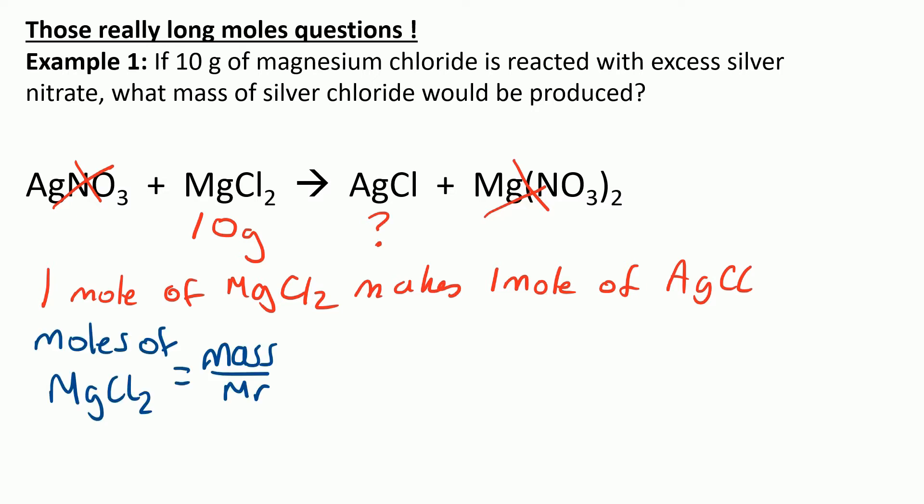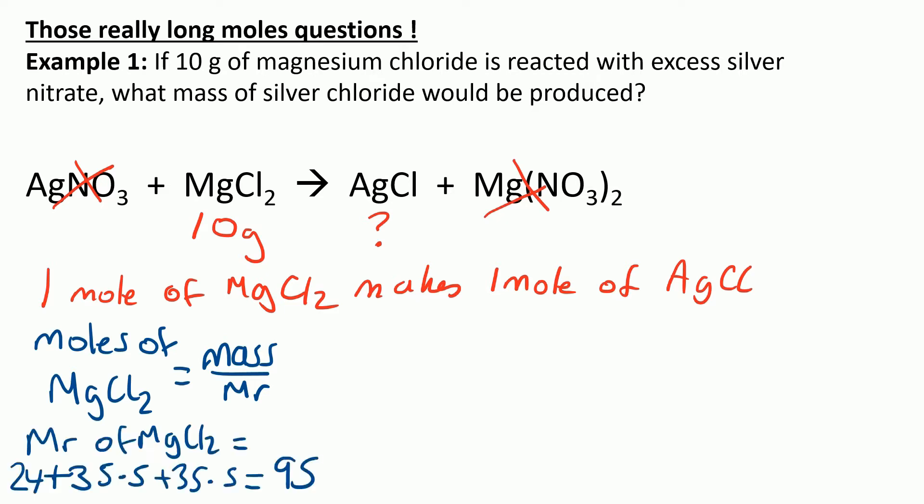So we work out the moles using mass over MR. It's a good idea to write next to it what you're working out the moles of — so moles of MgCl2 is mass over MR. The MR of MgCl2 is the mass numbers of magnesium, 24, plus 35.5, plus 35.5 for the two chlorines, and that is 95. So we put that into the equation: 10 grams divided by MR 95, and that's 0.105 moles of MgCl2.